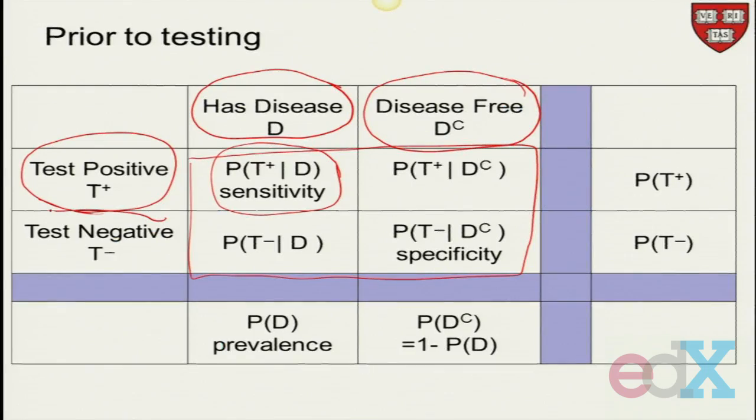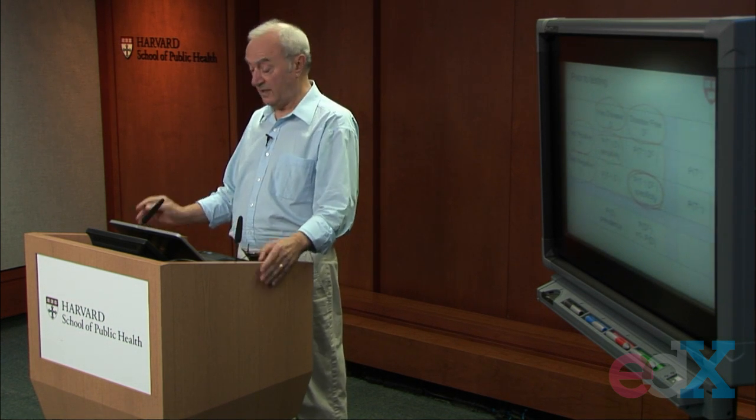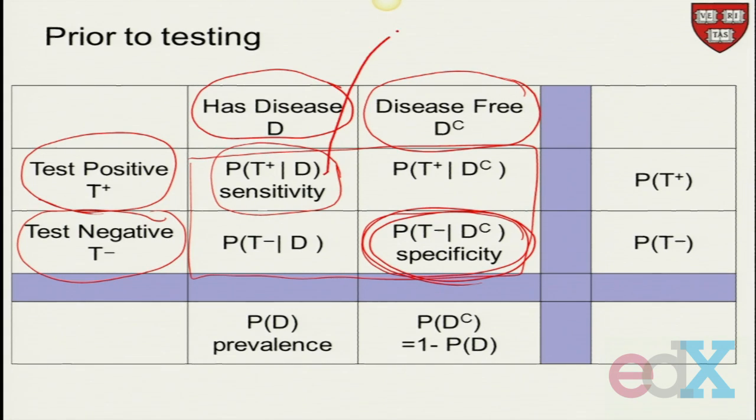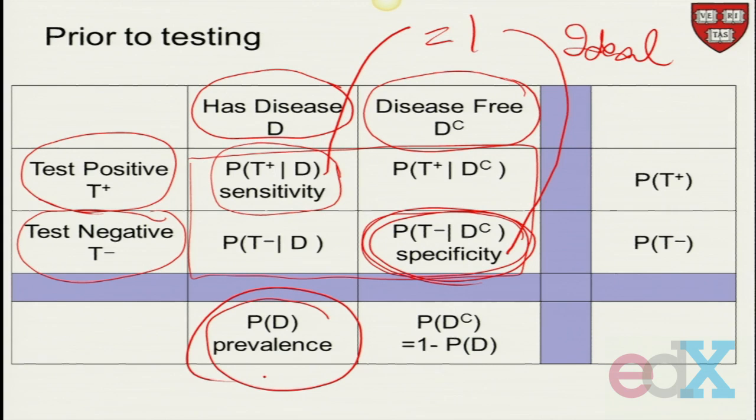How about testing negative? When should it test negative? When a person does not have the disease. That's called the specificity. Ideally, we would love a test where the sensitivity is equal to one and the specificity is equal to one. So for an ideal or perfect test, we have sensitivity and specificity equal to one. What about the people who have the disease? We call that the prevalence.